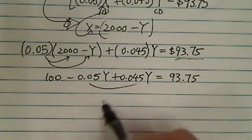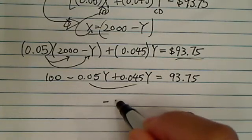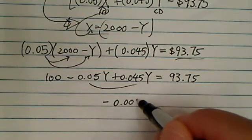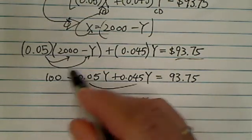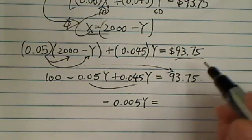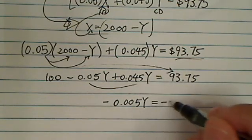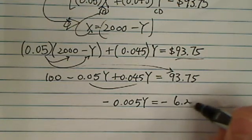From here, we're going to combine this. We're going to have a negative number. We'll have 0.005y and move the 100 over, which means subtracted. So subtracted 100 from each side, you'll have minus 6.25.